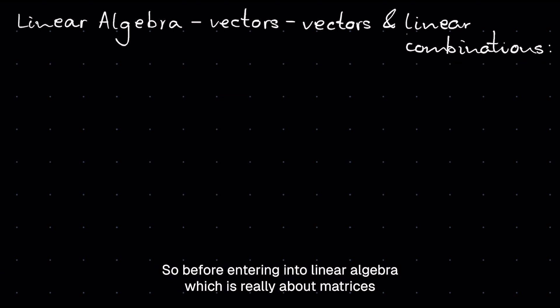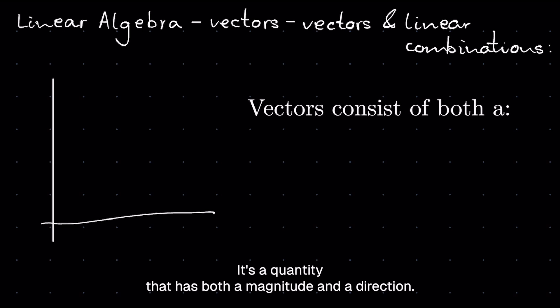So before entering into linear algebra, which is really about matrices and their properties, but just so you know, a vector is basically an arrow. It's a quantity that has both a magnitude and a direction.